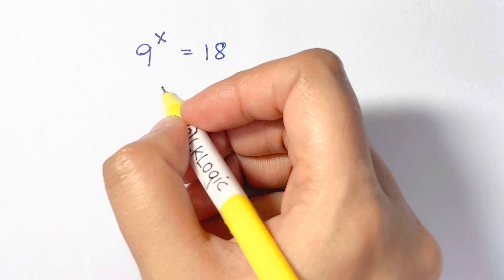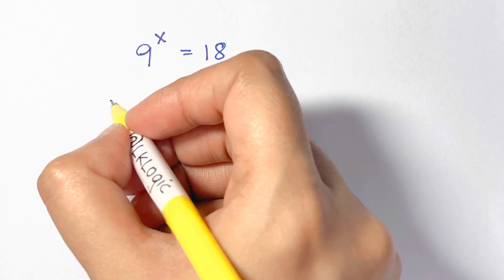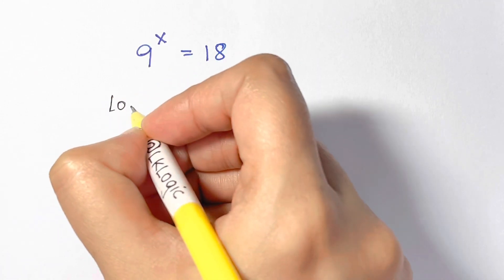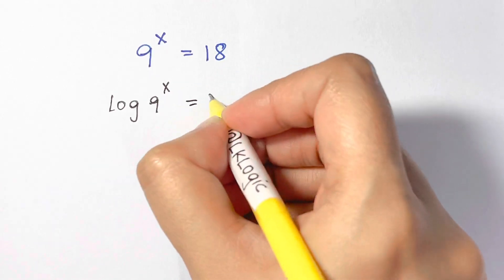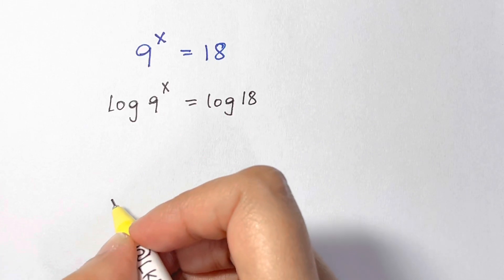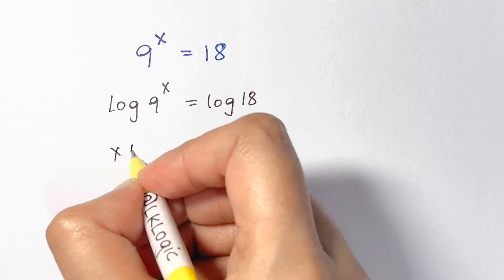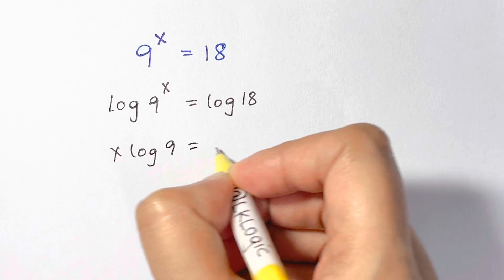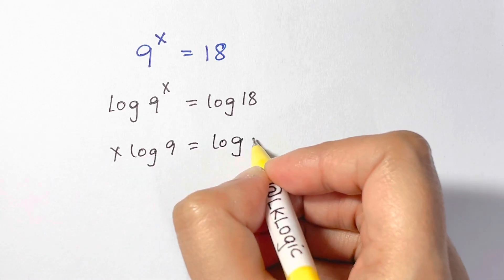So first of all, what we're going to do is apply log on both sides. So we get log 9 to the power of x equals log 18. And then we have x log 9 is equal to log 18.